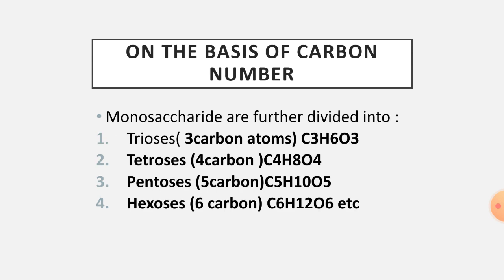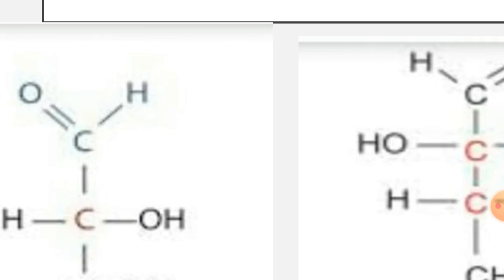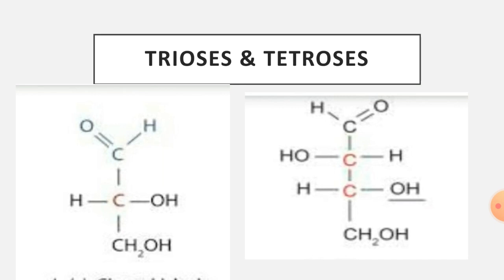Monosaccharides can be further classified on the basis of the number of carbon atoms present. Compounds with 3 carbon atoms are called trioses, with formula C₃H₆O₃. Compounds with 4 carbon atoms are called tetroses (C₄H₈O₄). Those with 5 carbon atoms are pentoses, those with 6 are hexoses, and this classification extends up to 9 carbon atoms.